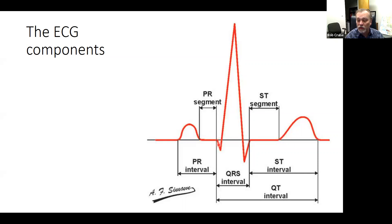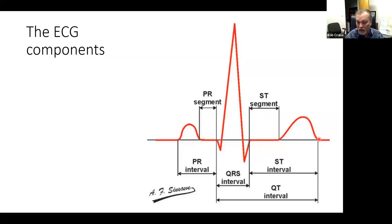The QRS complex is the large spike — the largest component of the ECG — going down, then back up, with the S coming back up. This is also called the J point when the QRS complex returns back to baseline. The ST segment is from the end of the S to the start of the T wave. The ST interval goes from that same starting point all the way to the end of the T wave. The QT interval goes from where the Q wave starts all the way to the end of the T wave. The QRS interval itself goes from when it starts downward to when it returns back to baseline.